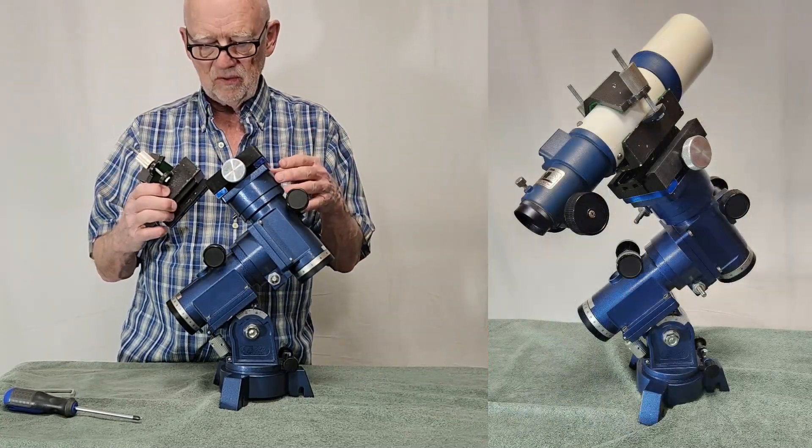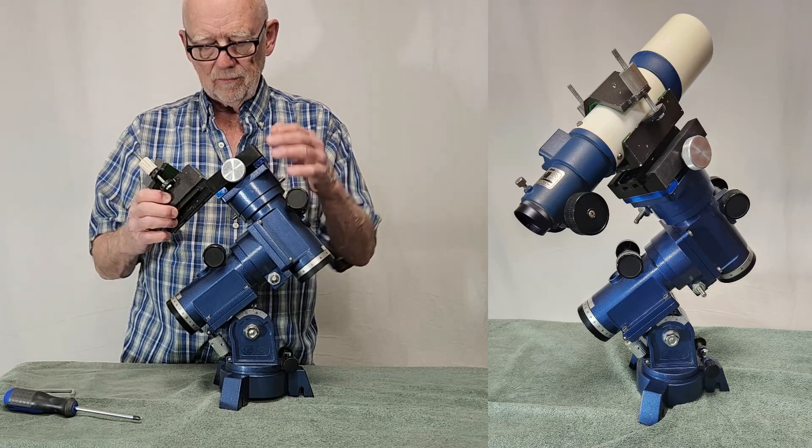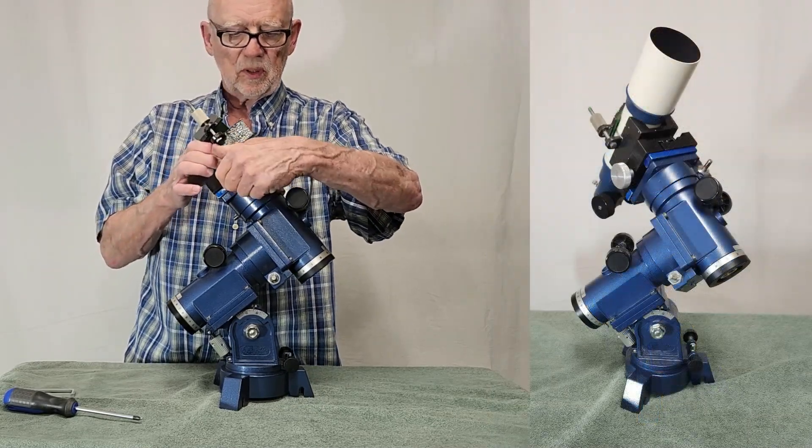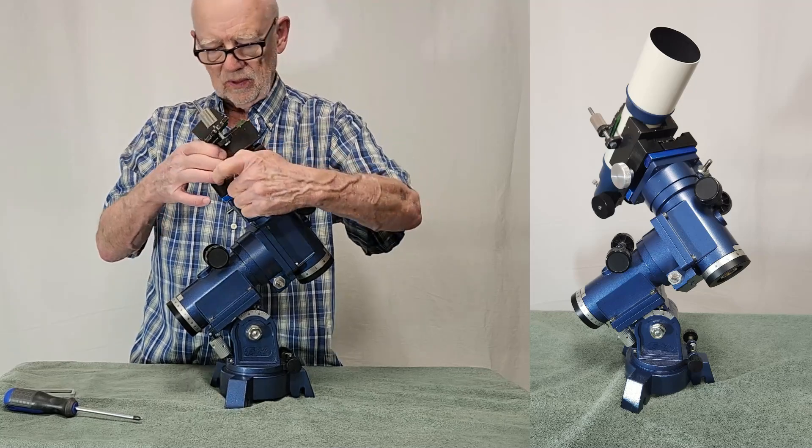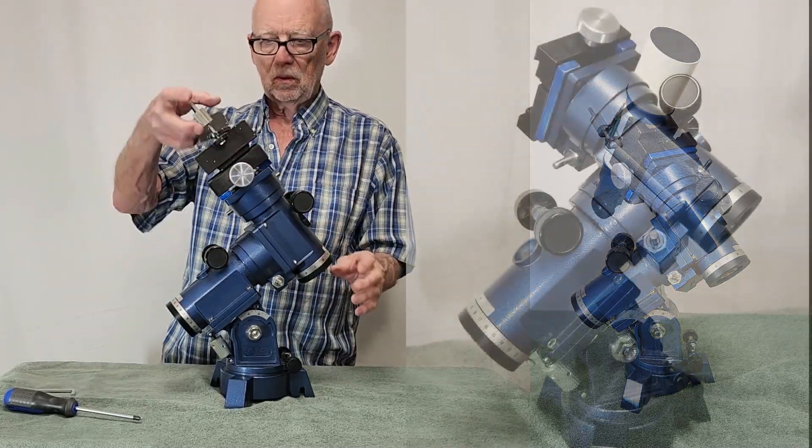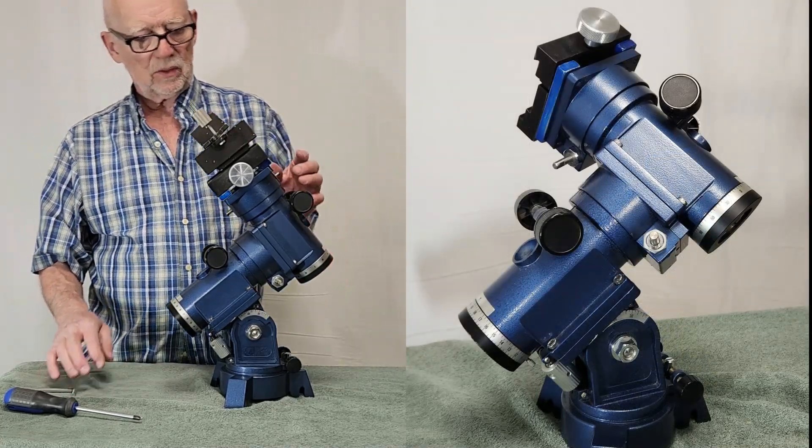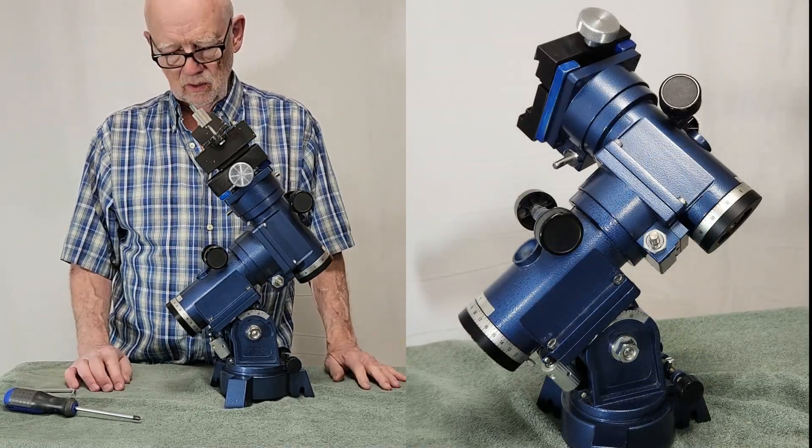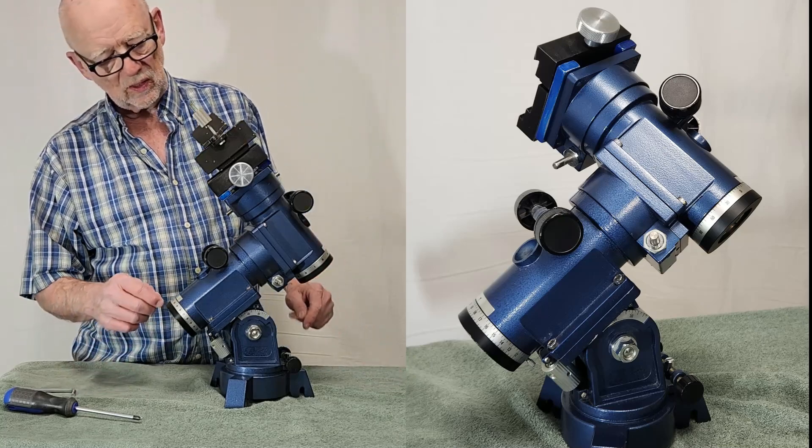This little Vixen dovetail has a universal telescope adapter kind of a thing. But this scope, you know, this scope could handle a much, much larger telescope. Big telescope. So I could put a D-plate on here with a great big four-inch refractor or something easily.